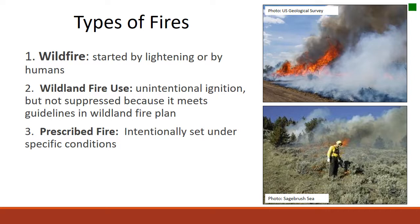The third type of fire is prescribed fire — intentionally set under specific conditions by professionals. Prescribed fires and wildland fire use fires can be great management tools because they can reduce the amount of ground fuels, lowering the potential for large wildfires in the future. If we do have wildland fires in the future, areas that have already burned once are typically less intense and easier to contain because we've changed the fuel structure somewhat.